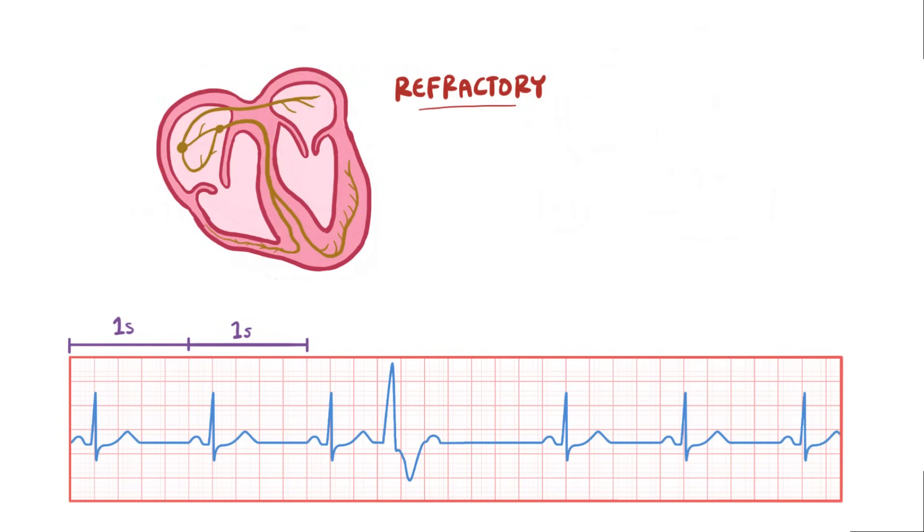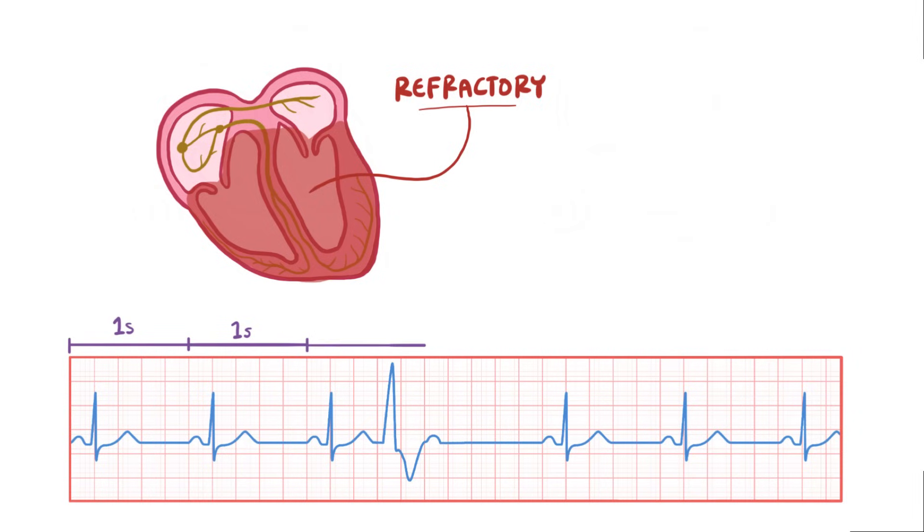A split second later, the ventricle enters its refractory period. Since the sinus node is going at 1 beat per second, and it's out of refractory, it fires off a signal and the atria contracts and you get another P wave, which is right on schedule. But this time the opposite thing happens, and the ventricle is in refractory, so it doesn't contract. Now both relax and come out of refractory, and exactly one second later the sinus node sends another signal and the atrium contracts as it should, and then everything carries on as per usual.